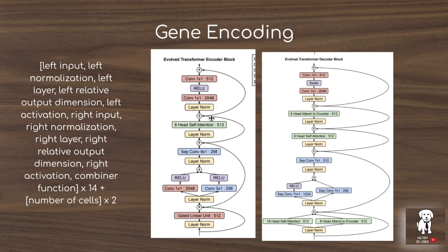This image is an example of the final encoder block found by the Evolved Transformer search, and this is an example of the decoder block. You can see from the blocks the evidence of the left and right branching structure that manifests itself in the final evolved transformer encoder and decoder blocks. Following this, we'll look at exactly how you would encode the original transformer architecture given this genetic coding search space.